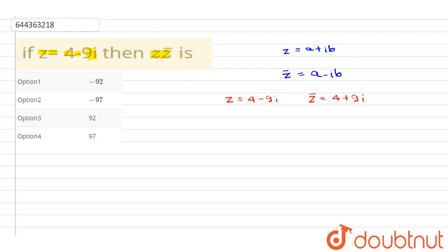We just need to multiply them now. z into z cap, z into z cap is equal to 4 minus 9i multiplied by 4 plus 9i.